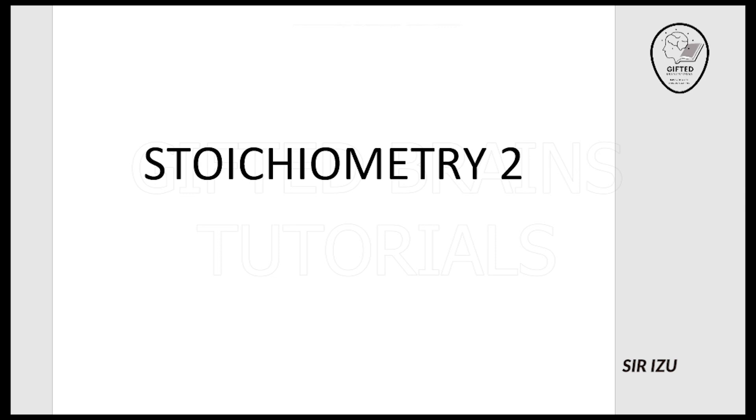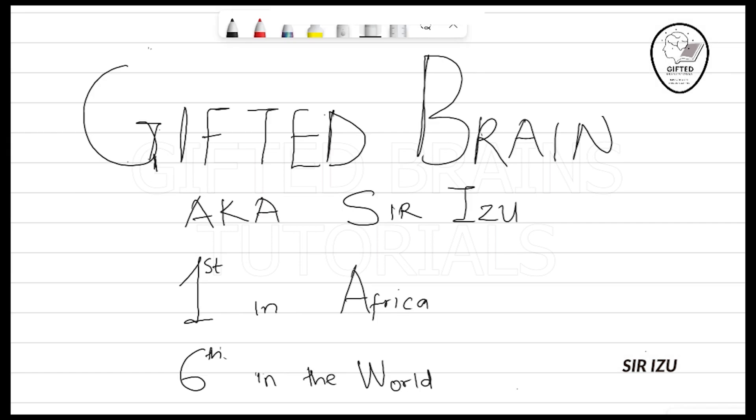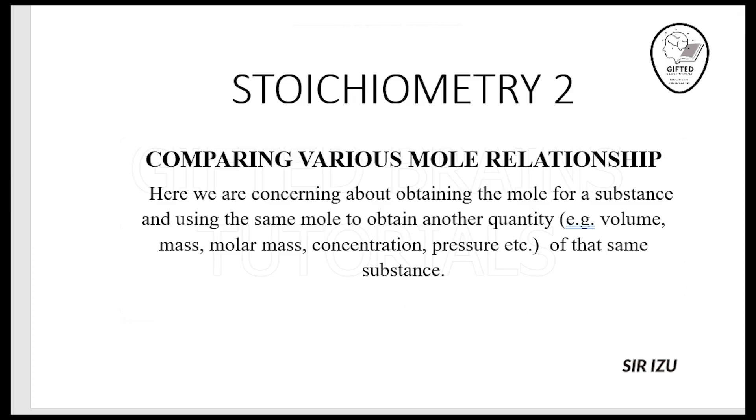Good day everyone. Welcome to our Stoichiometry 2 class. This is Gifted Brain aka Sir Izu, first in Africa, best in the world. In our stoichiometry class, we are concerned with comparing various mole relationships. We get the mole from one relationship and use that same mole to obtain another quantity. Let's take some examples this moment.